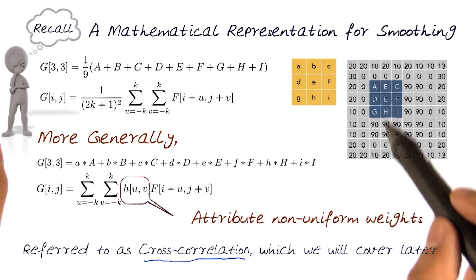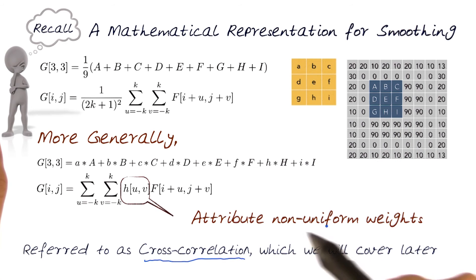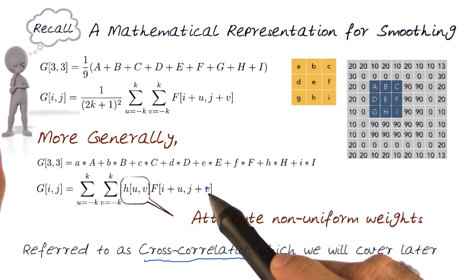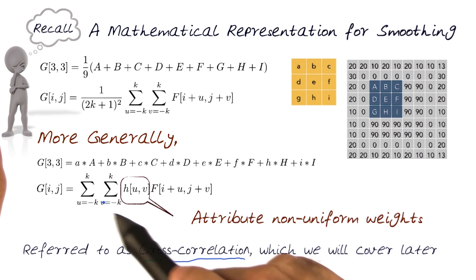Which basically was now trying to change and put non-uniform weights to be able to impact the output image. And again, we would loop over the entire image this way.